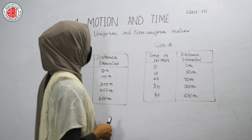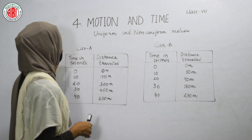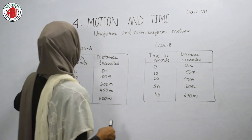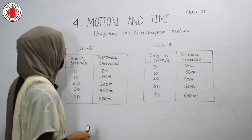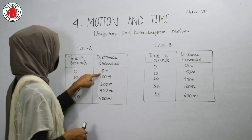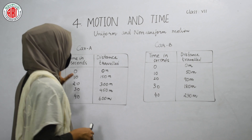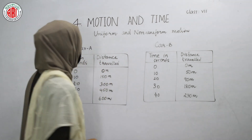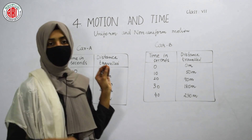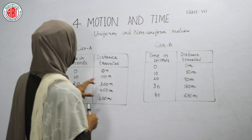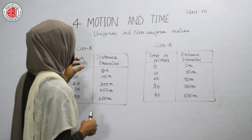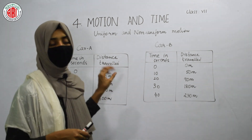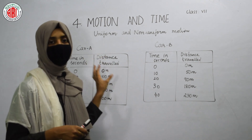Let us take one more example to understand the difference between uniform and non-uniform motion using data for Car A and Car B. The data shows time in seconds and distance traveled. For Car A, the change in position for every 10 seconds is 150 meters — at 10 seconds it has moved 150 meters, at 20 seconds it has moved 300 meters — a constant change of 150 meters every 10 seconds.